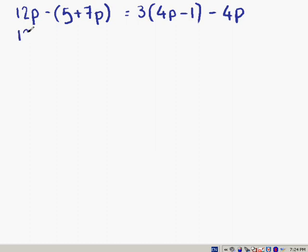So we'll write down 12p again at the start. Minus 1 times 5 is minus 5. Minus 1 times plus 7p is minus 7p.